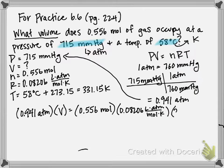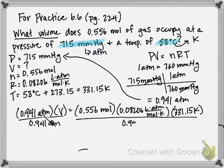And my temperature is 331.15 K. So then, if I divide by my pressure on both sides, that'll cancel. And I should get that my volume, after I divide everything, is equal to 16.1 liters.